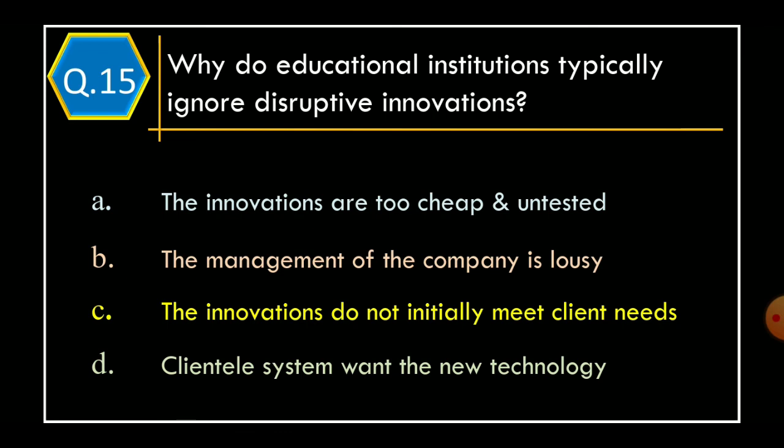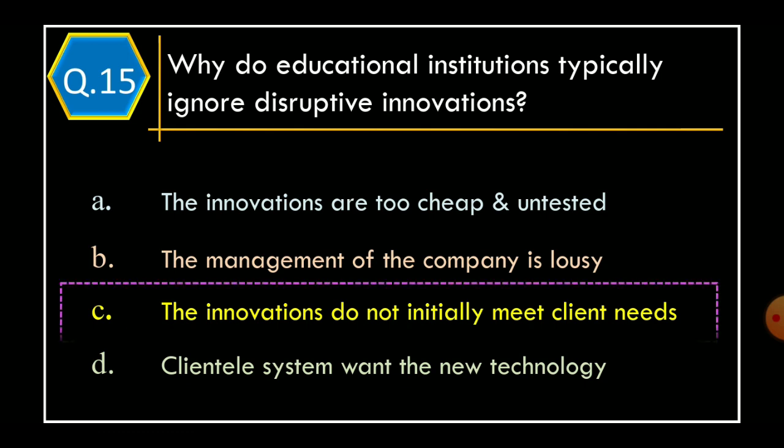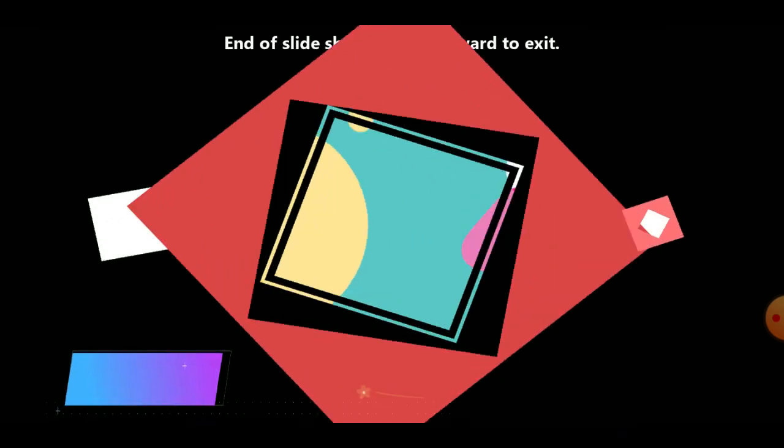Question 15. Why do educational institutions typically ignore disruptive innovations? Option A: The innovations are too cheap and untested. Option B: The management of the company is lousy. Option C: The innovations do not initially meet client needs. Option D: Clientele systems want the new technology. The correct option is Option C: The innovations do not initially meet client needs. Thanks for watching.